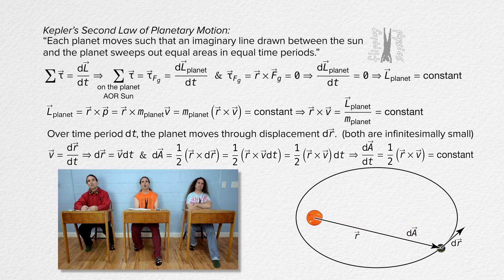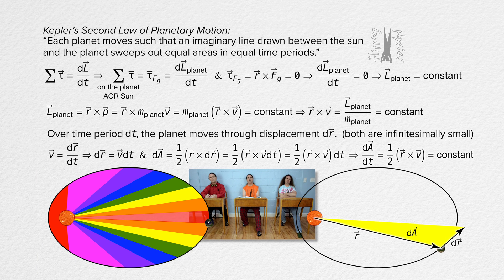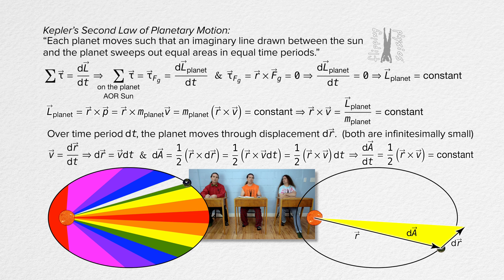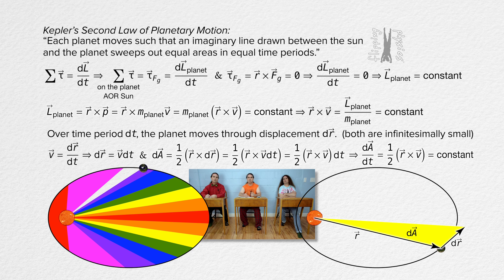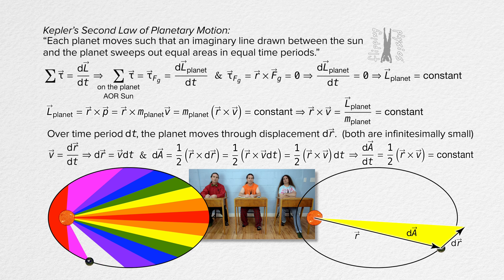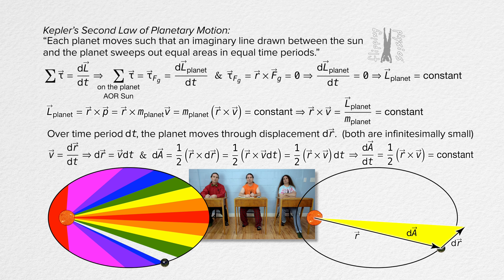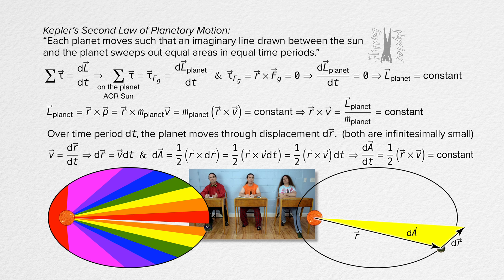Why is the shape of area dA different than the shapes in the original illustration showing Kepler's Second Law? He must have exaggerated the length of the displacement dr so he could see it in the illustration. Displacement dr is actually infinitesimally small, which means area dA is also infinitesimally small. Each of the areas in the original illustration is the summation of an infinite number of infinitesimally small areas dA, and therefore those areas in the illustration will not have the same shape as area dA.